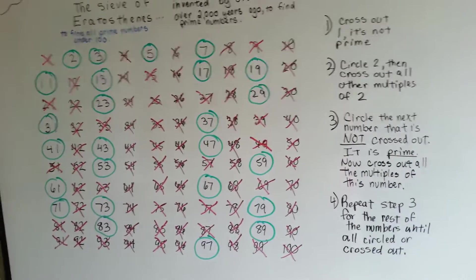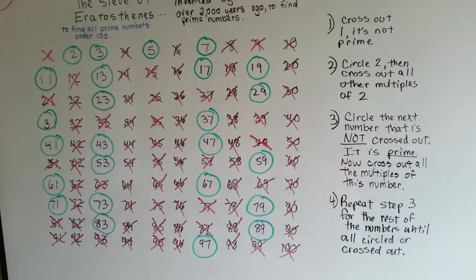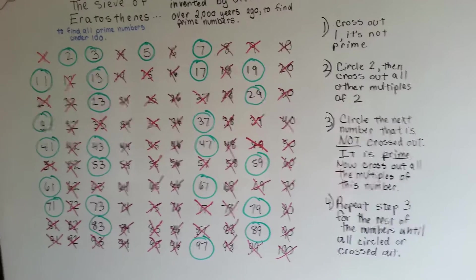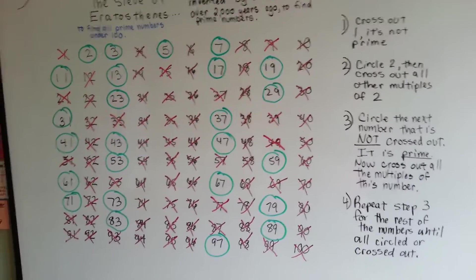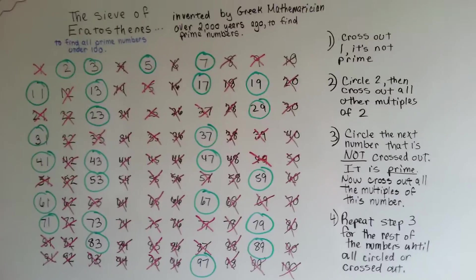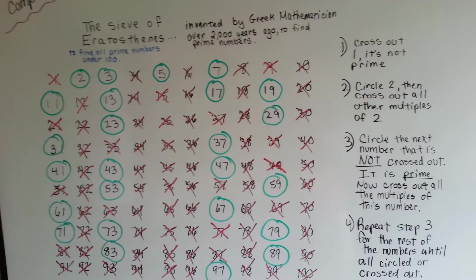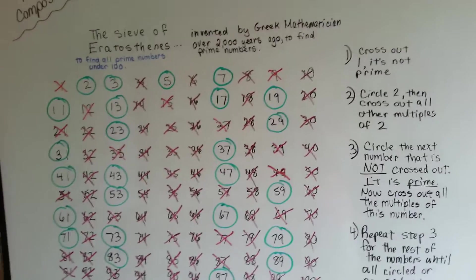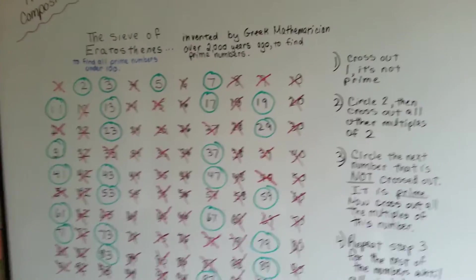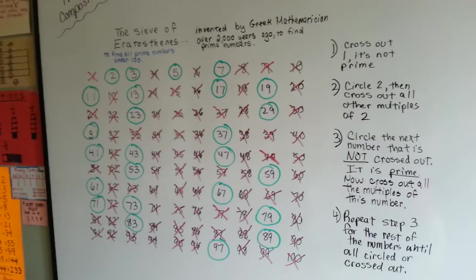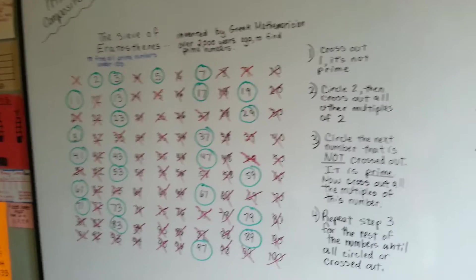You just follow these. If you want to pause it right now and do that, you can. Did you also know that Eratosthenes was the first to accurately figure out the circumference of the Earth? He also figured out the distance to the Sun and made the first world map. Pretty smart guy, huh? So that is his sieve to find prime numbers under 100.